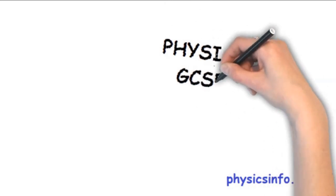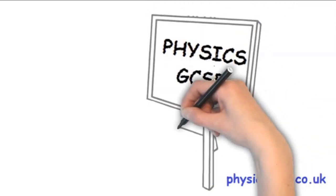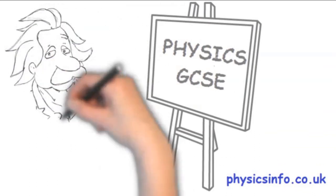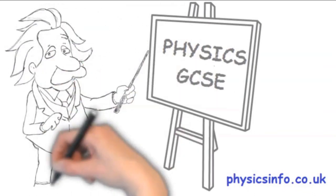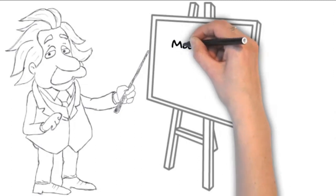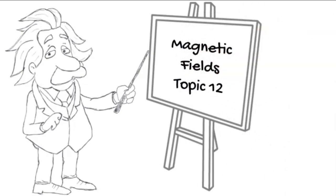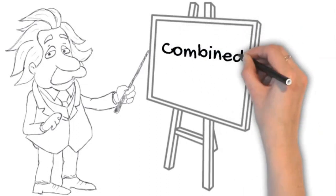Physicsinfo.co.uk. Another in the series of Physics GCSE revision topics. Topic 12: Magnetic Fields and Magnetism. Combined Science.